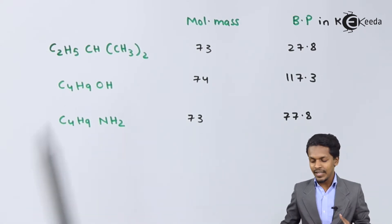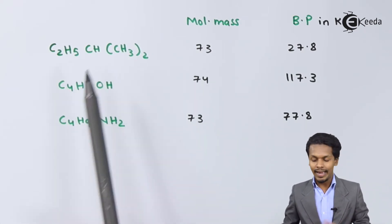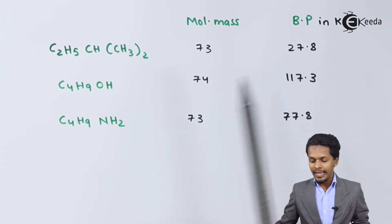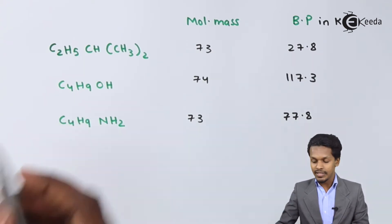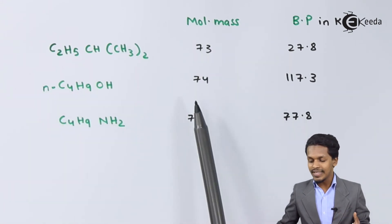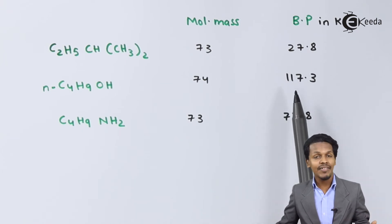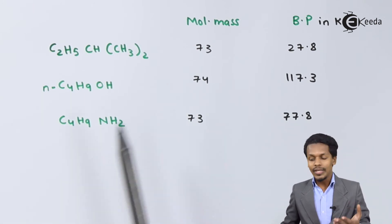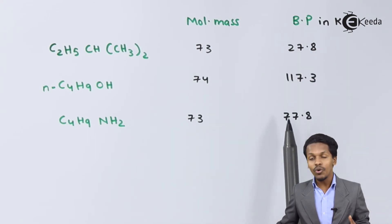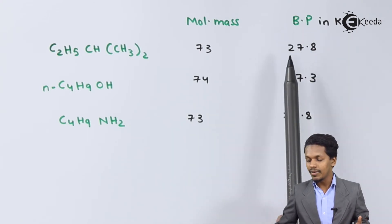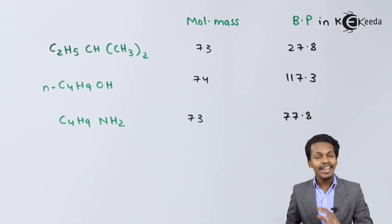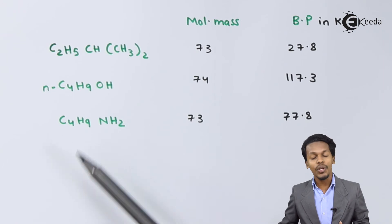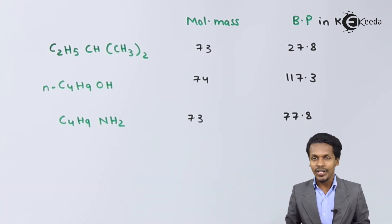For example, consider a normal alkane with a molecular mass of 73 — its boiling point is 27.8°C. An alcohol with a molar mass of 74 has a boiling point of 117.3°C. A primary alkyl amine with a molar mass of 73 has a boiling point of 77.8°C, which falls between those two values. This confirms that amines have a higher boiling point than alkanes but a lower boiling point than alcohols.